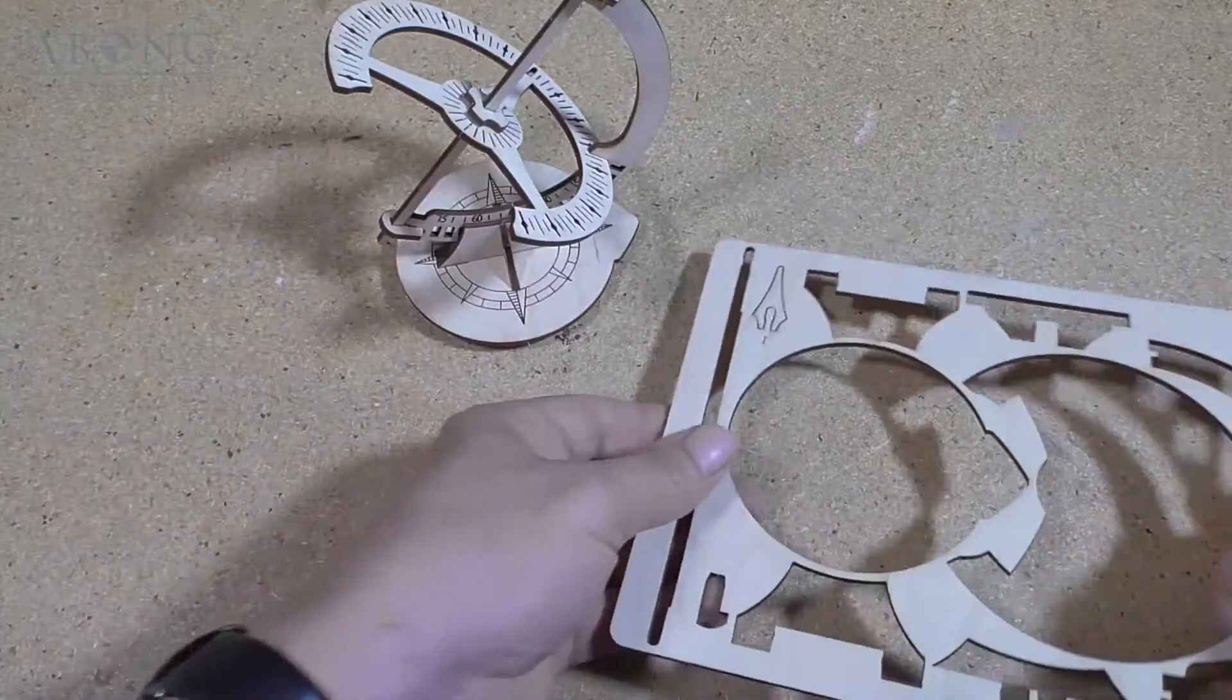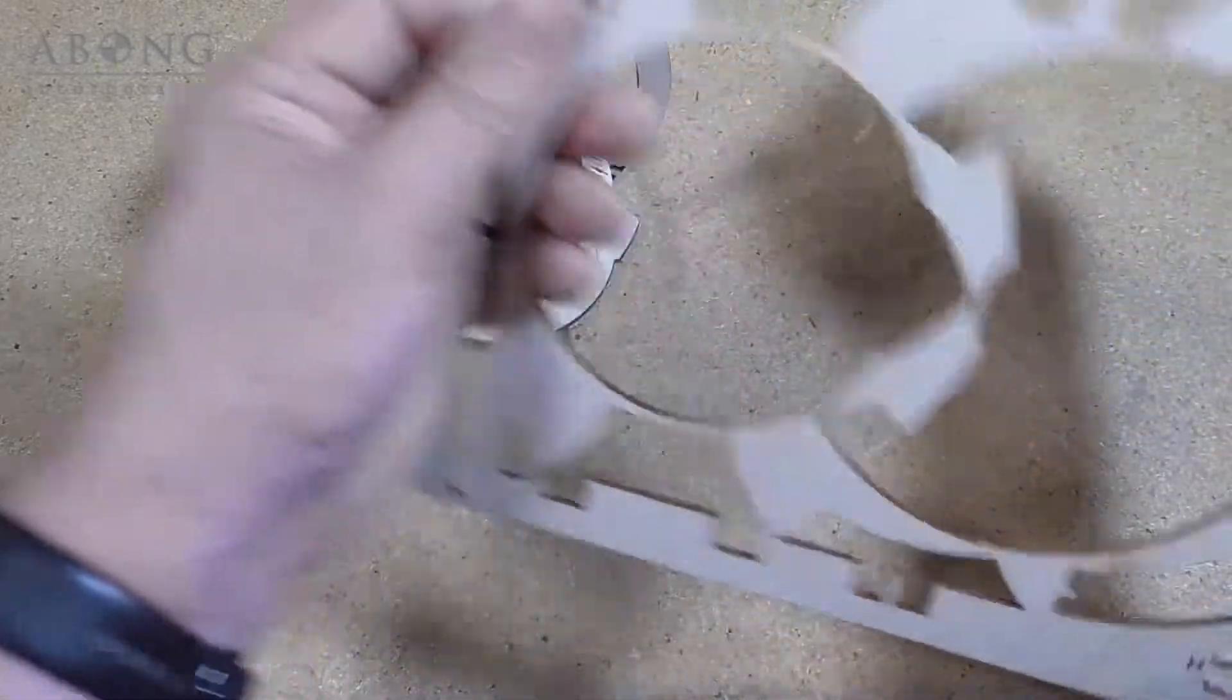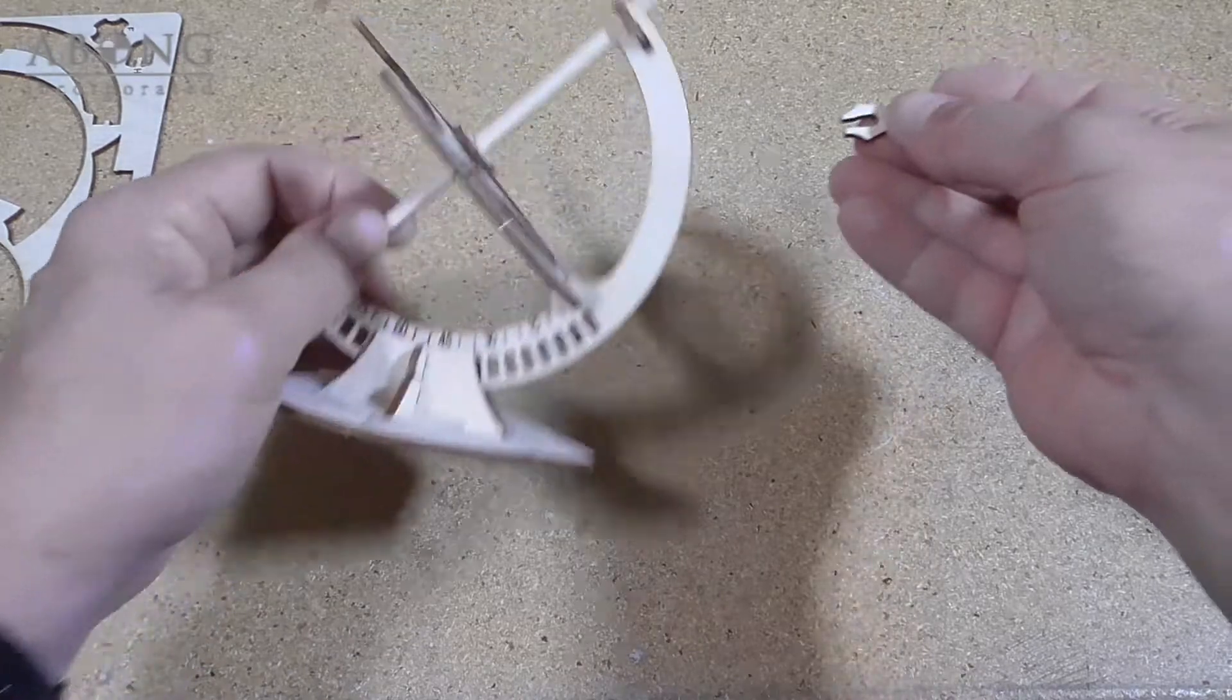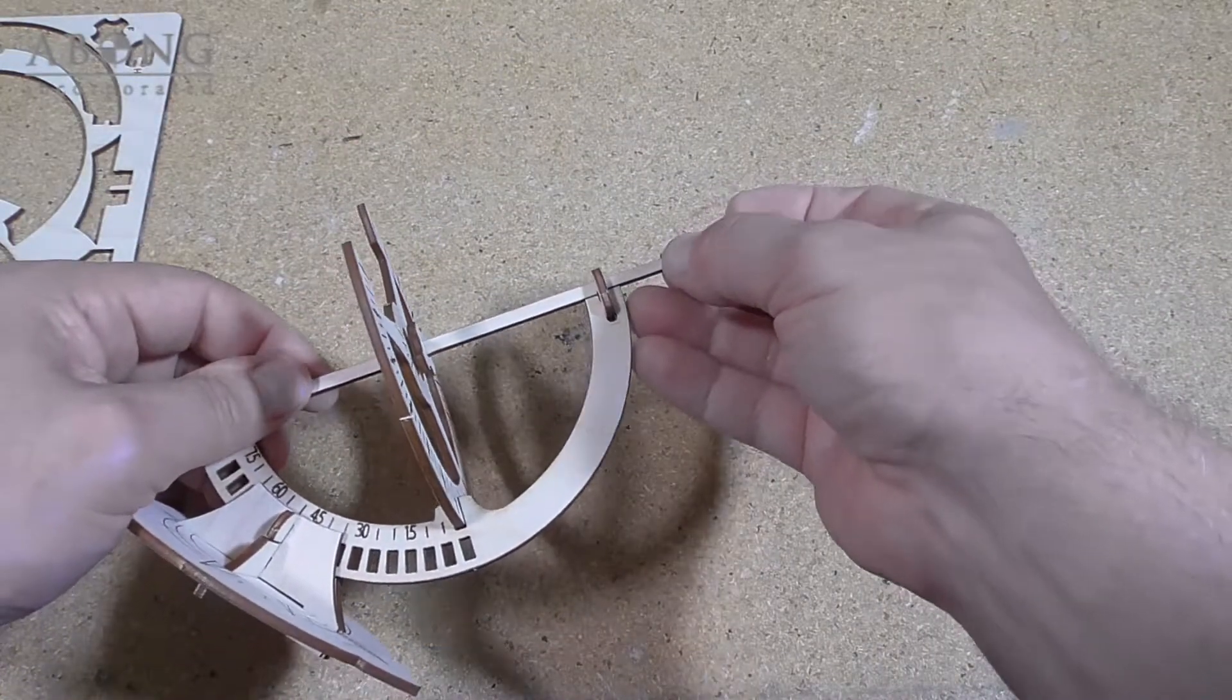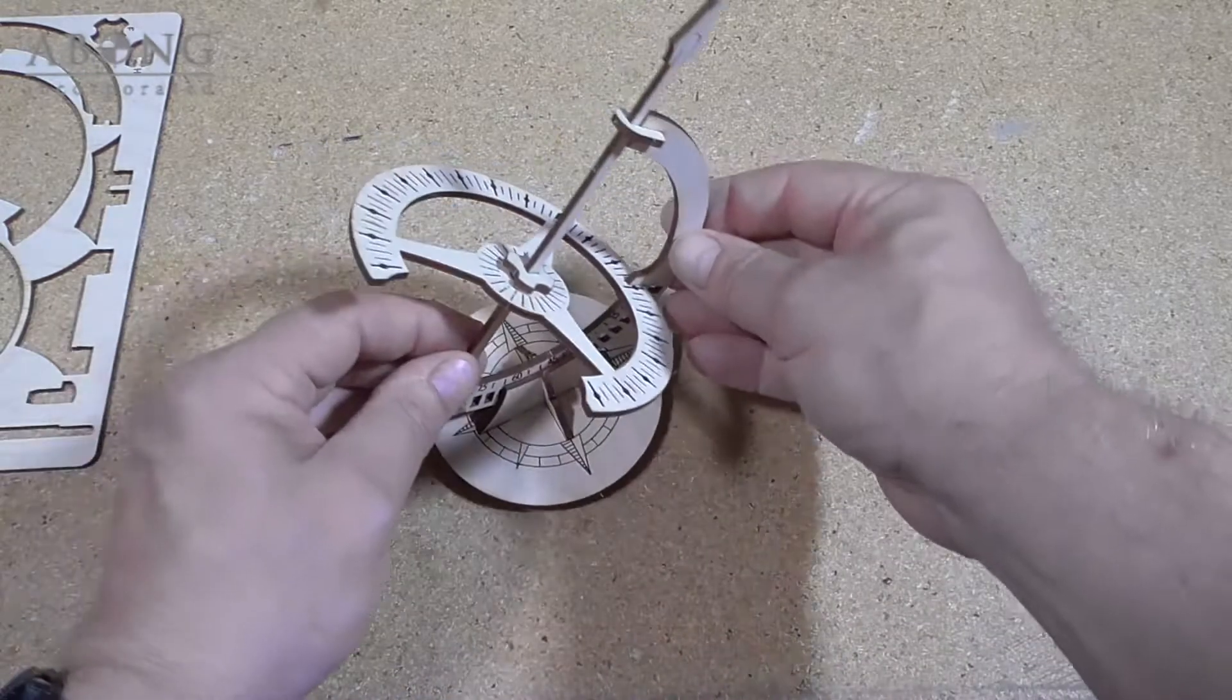And finally, you can add the decorative arrow. And that just presses right onto the end of the gnomon. And we're done.